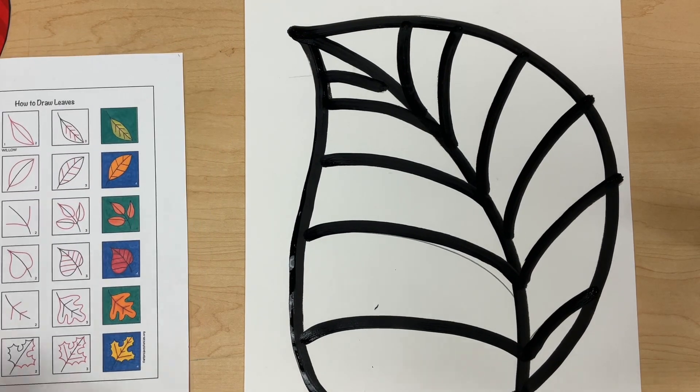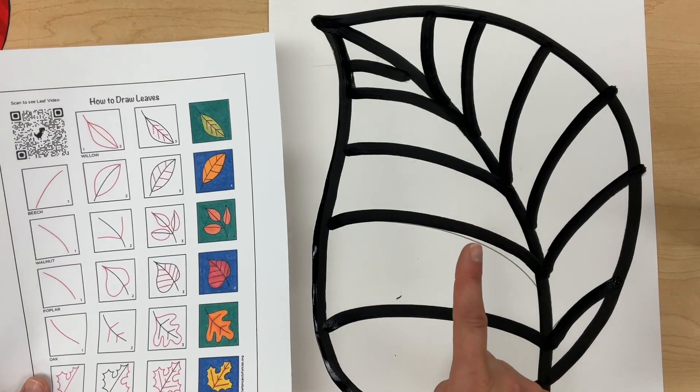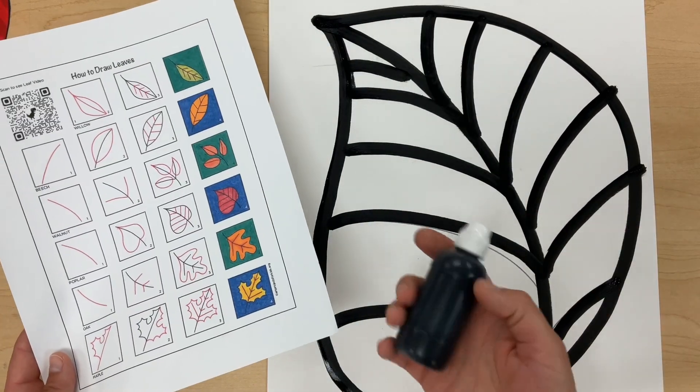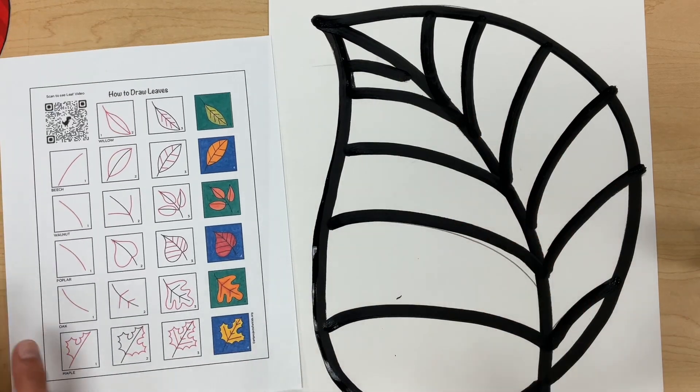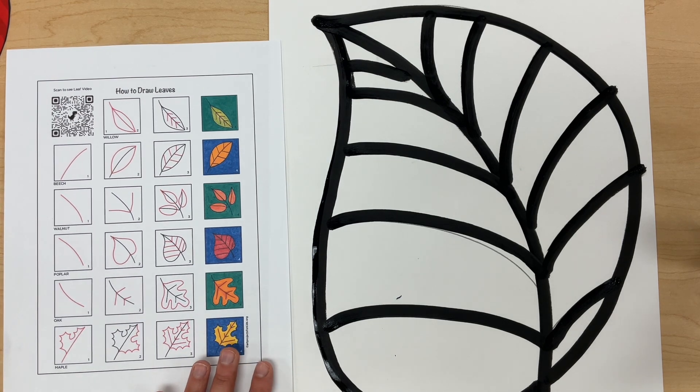All right friends, your goal is to get your giant paper, your how to draw paper. You're going to write your name first, draw your leaf with a pencil second, then I will check it and give you a paint marker to outline or trace over your lines third. If you need help, feel free to raise your hand or ask a friend. Happy creating!